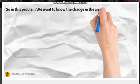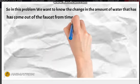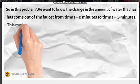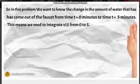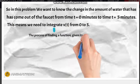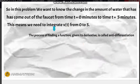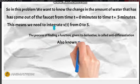So in this problem we want to know the change in the amount of water that has come out of the faucet from T = 0 to T = 5 minutes. This means we need to integrate V(T) from 0 to 5.